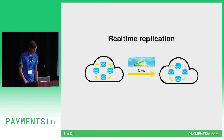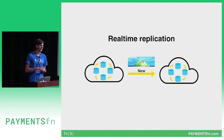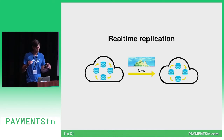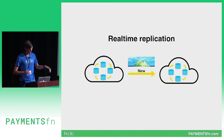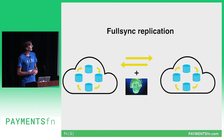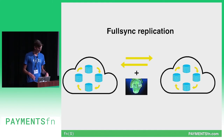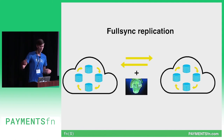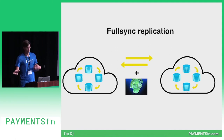Real-time replication is the process of just moving new changes in data to a new cluster. This ensures data is synchronous across all the clusters. Full sync replication covers the historical data that you want to transfer. When we first set this up, we used it as a way to provide disaster recovery scenarios, so we had a slave cluster that was constantly getting writes.